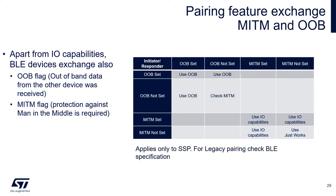Apart from I/O capabilities, the pairing method selection also depends on whether OOB data are present and whether man-in-the-middle protection is required. If at least one device has out-of-band data, OOB will be used as the pairing method. In the typical scenario when a phone taps the device, it reads the security credentials from the NFC tag and sets the OOB flag in the pairing feature exchange. If OOB data are not present on any device, selection goes through the man-in-the-middle flag. If at least one device sets this flag, I/O capabilities decide the pairing method. If neither device sets the MITM flag, JustWorks is used.